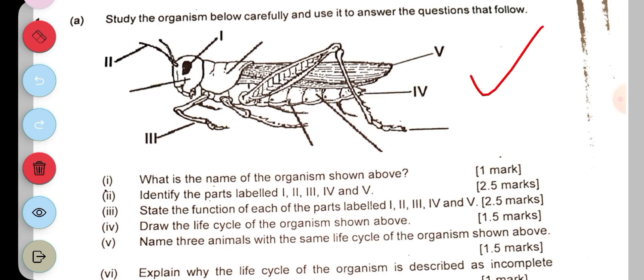The next part asks to identify the parts labeled i to v. Part i is the compound eye, ii is the antenna, iii is the fore limb, iv is the ovipositor, and v is the wings.